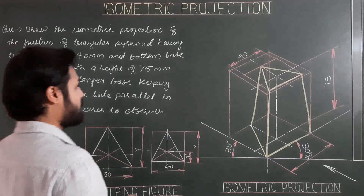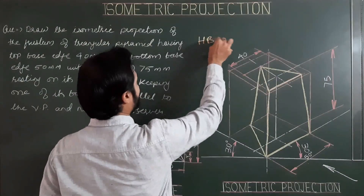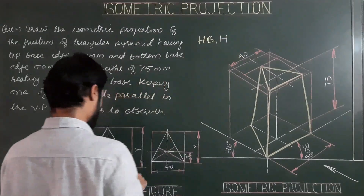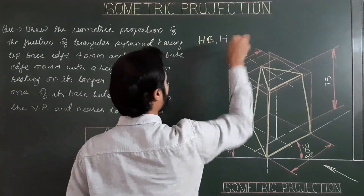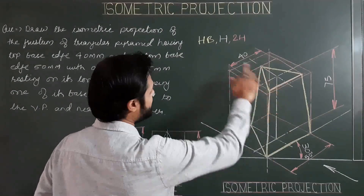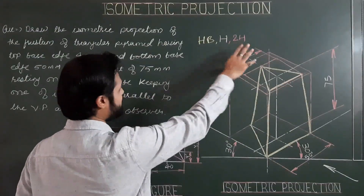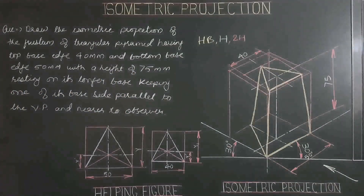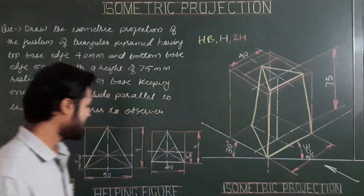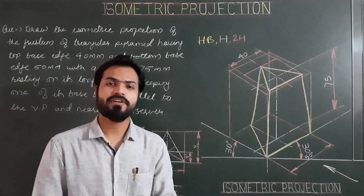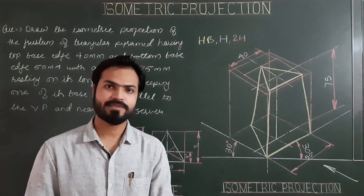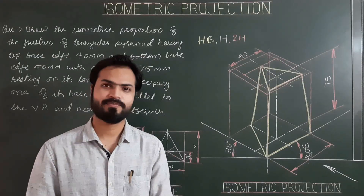Color code for this problem: use yellow color for HB pencil, white color for H pencil, and pink color for 2H pencil. Pink is for all construction work (light work), H pencil for medium work — all naming, center lines — and HB for the final outline. Please draw this problem indicating direction of observation, dimensioning, and naming in your sheet. If you have any doubt regarding this problem or any other problem from engineering graphics, please message or comment. Thank you.